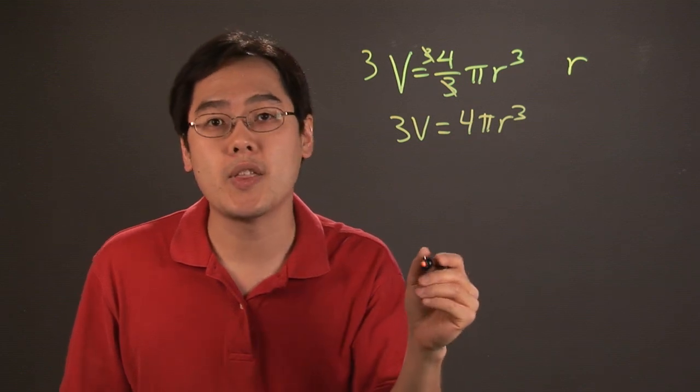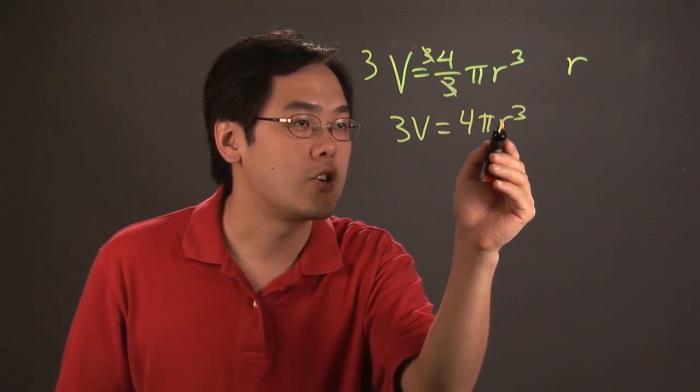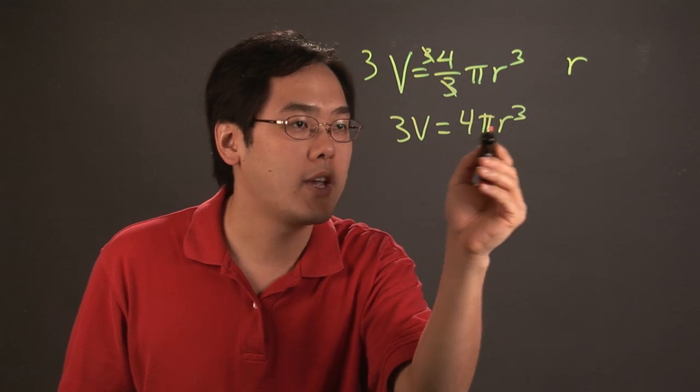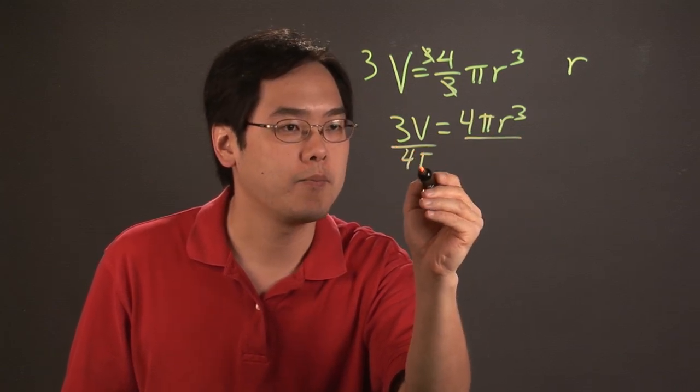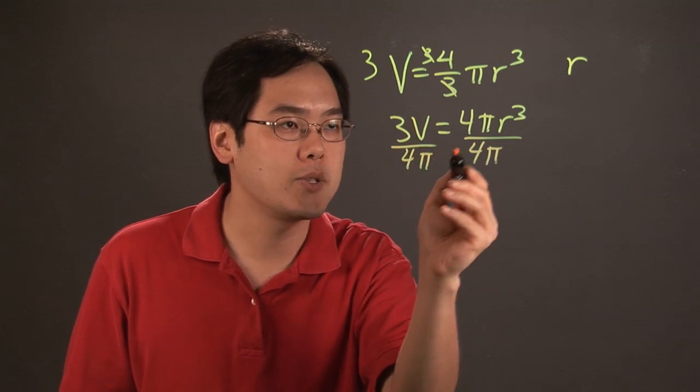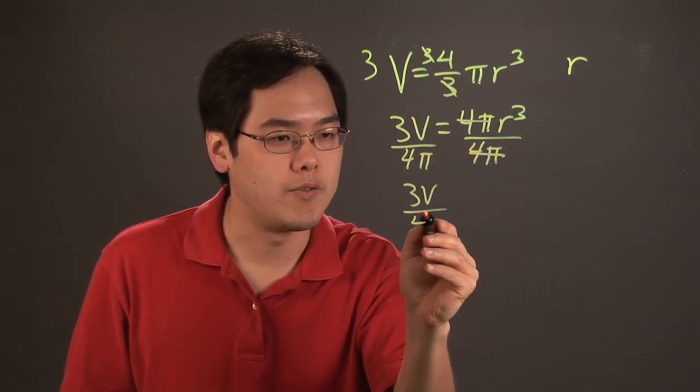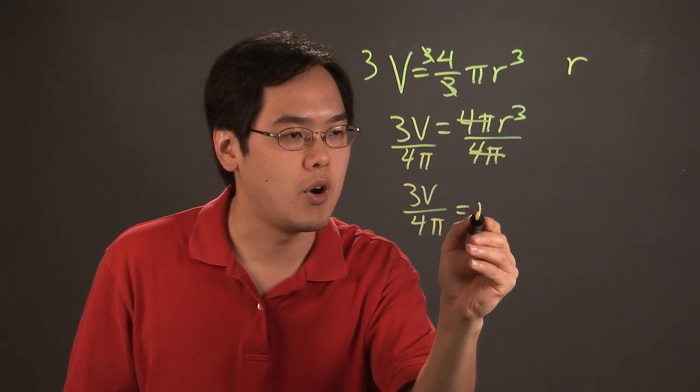Now to get r by itself, you want to get the non-r terms out of the way. So being that the terms that are with the r term is 4 pi, go ahead and divide both sides by 4 pi. Here, nothing really cancels, but the 4 pi's reduce. So you have 3v over 4 pi equals r to the third.